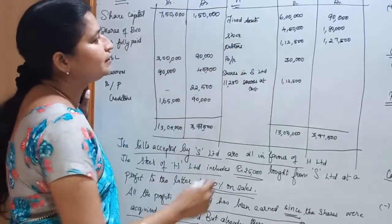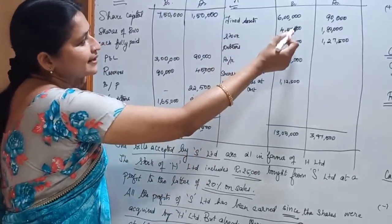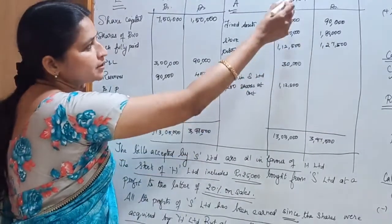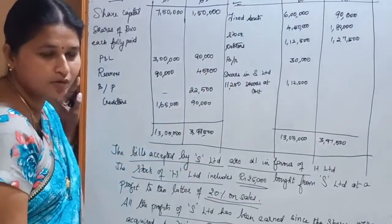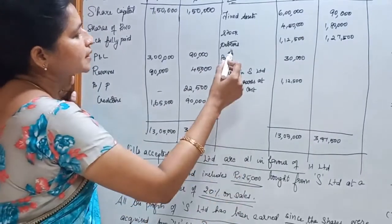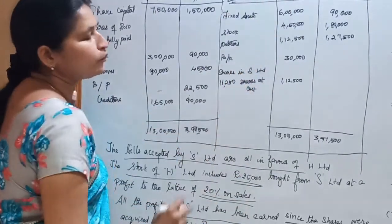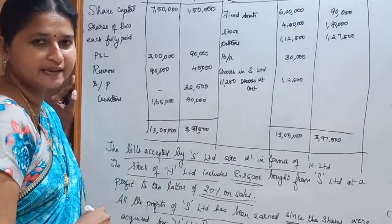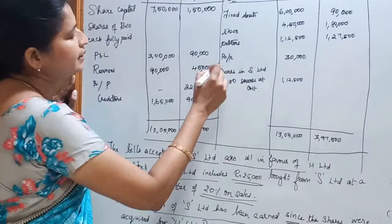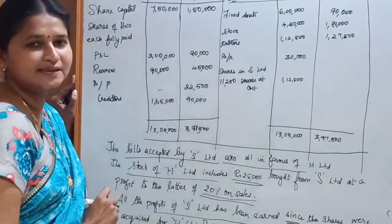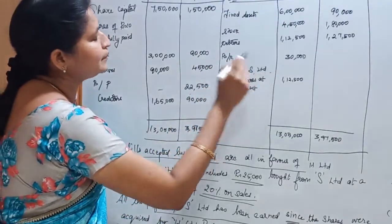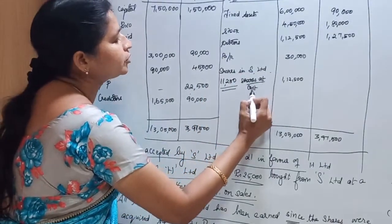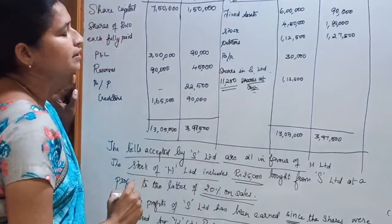Coming to the asset side: Fixed assets Rs.6,000 in H Limited and Rs.90,000 in S Limited. Stock Rs.4,50,000 in H Limited and Rs.1,80,000 in S Limited. Debtors Rs.4,000 in H Limited Rs.1,25,000 and for S Limited debtors Rs.1,47,500. Bills receivable for H Limited is Rs.30,000. Shares in S Limited: 11,250 shares at cost Rs.1,12,500.